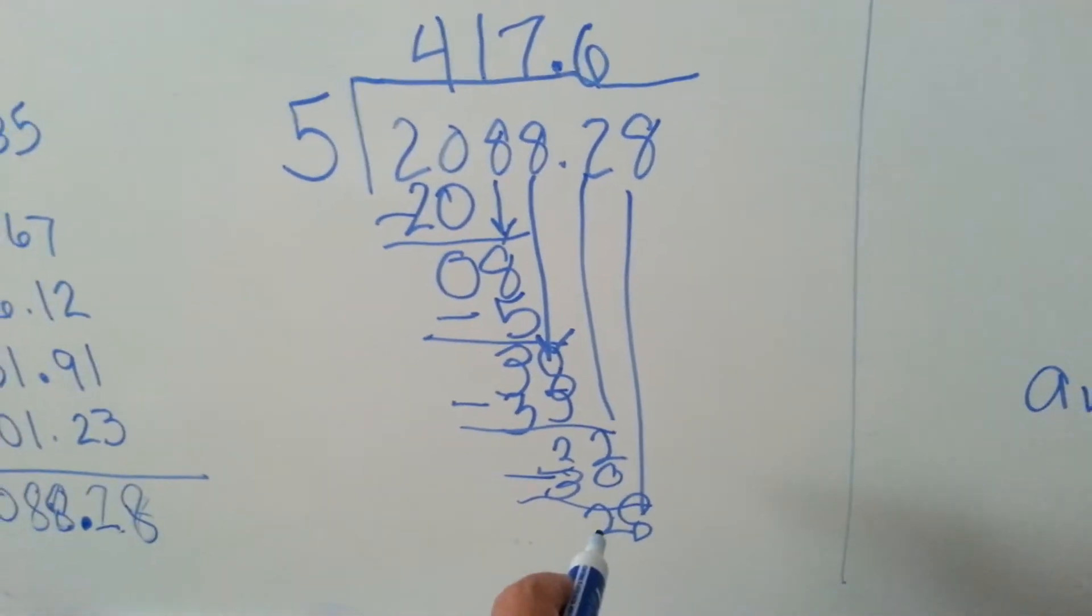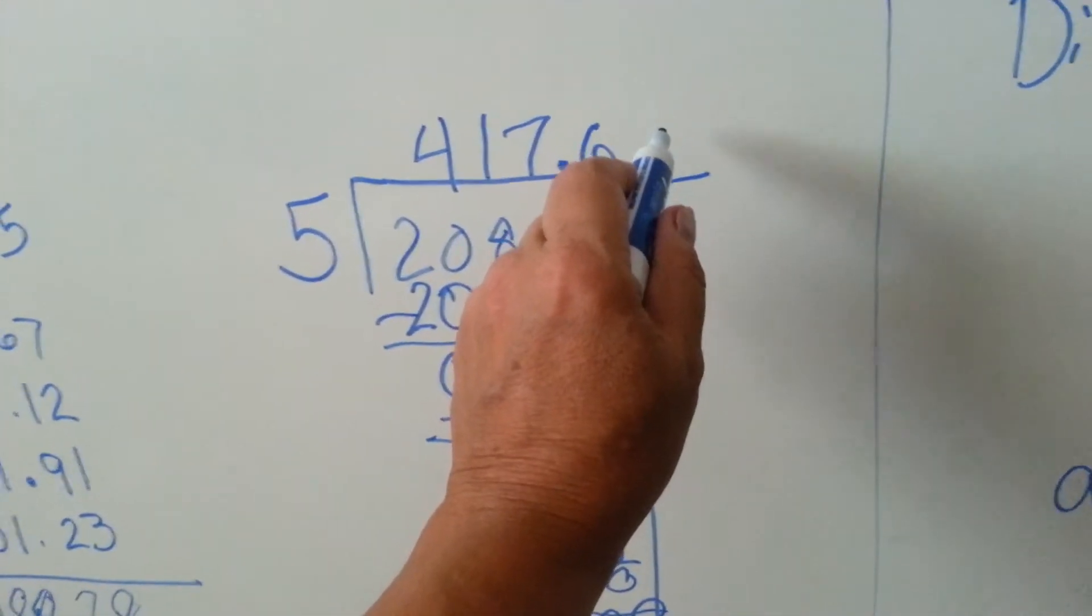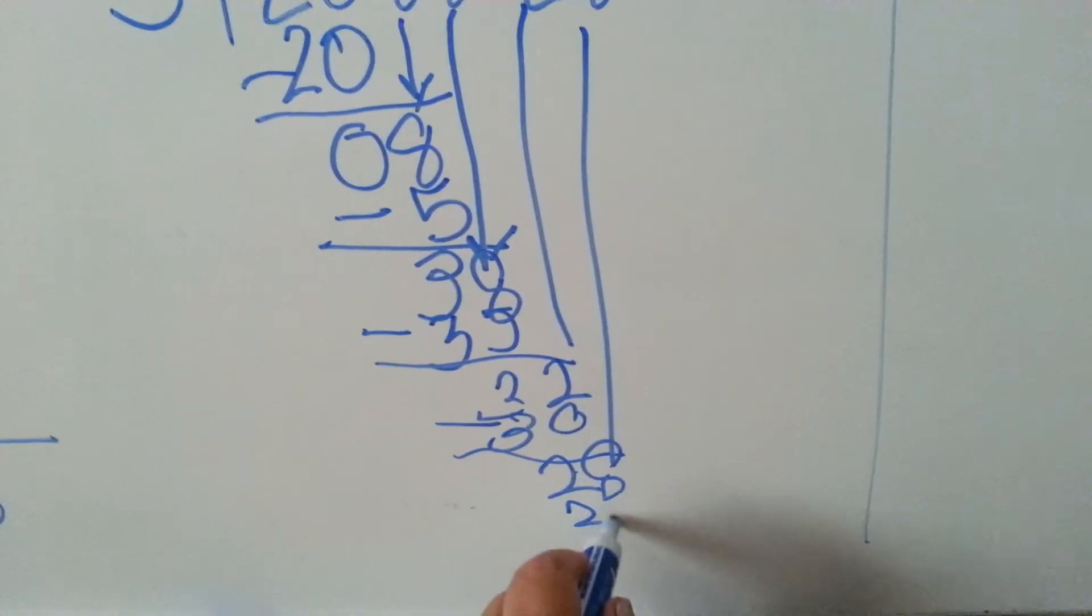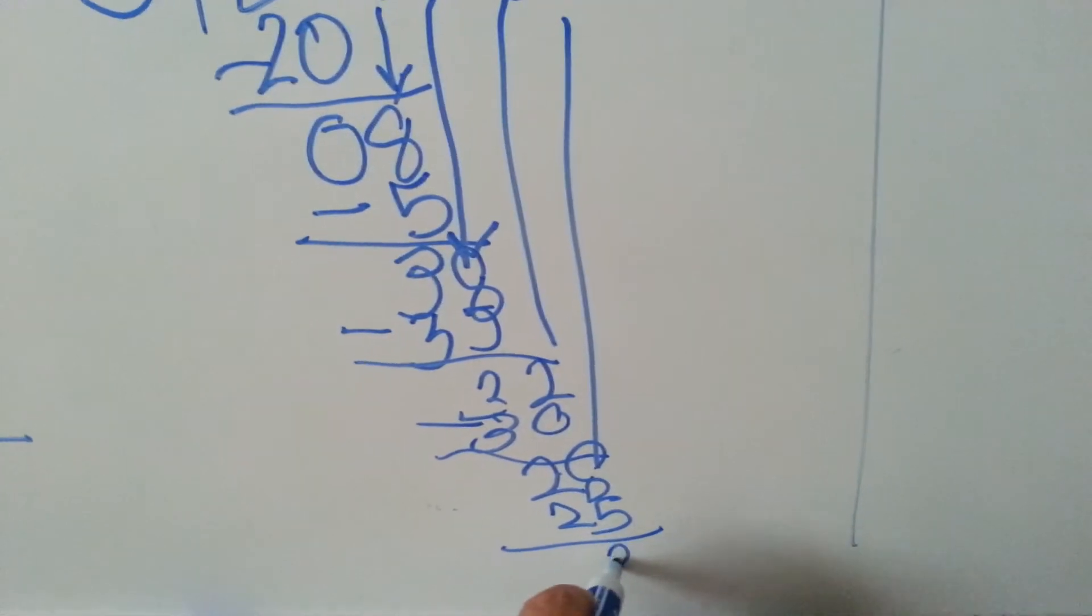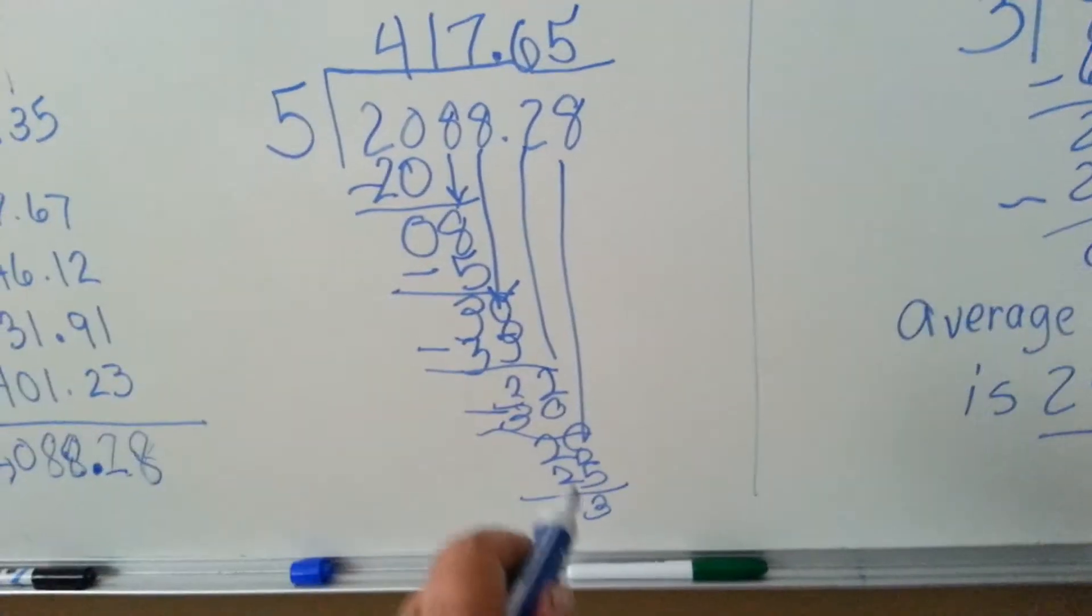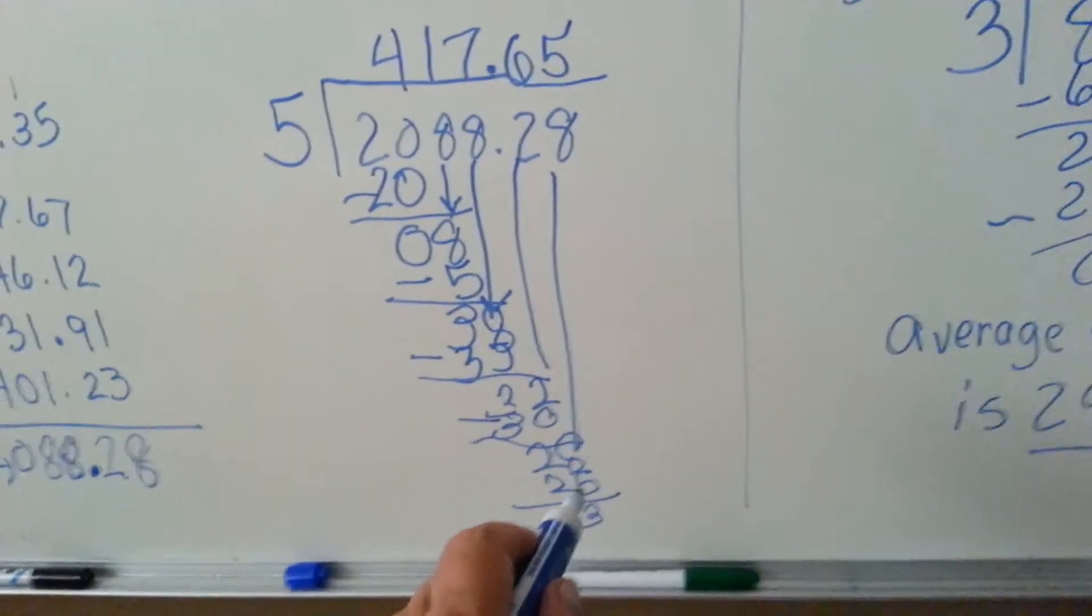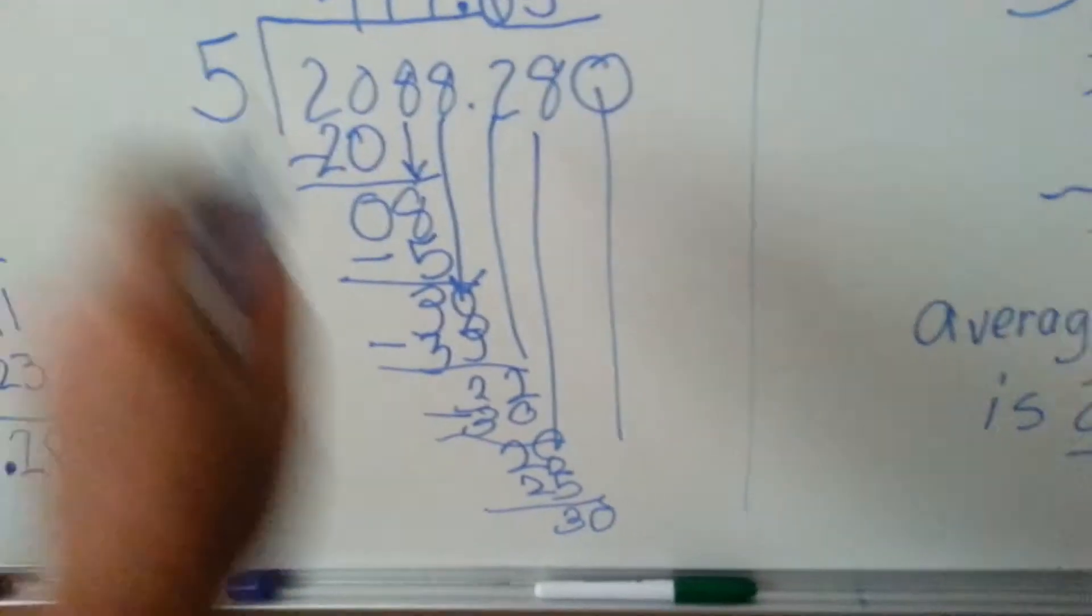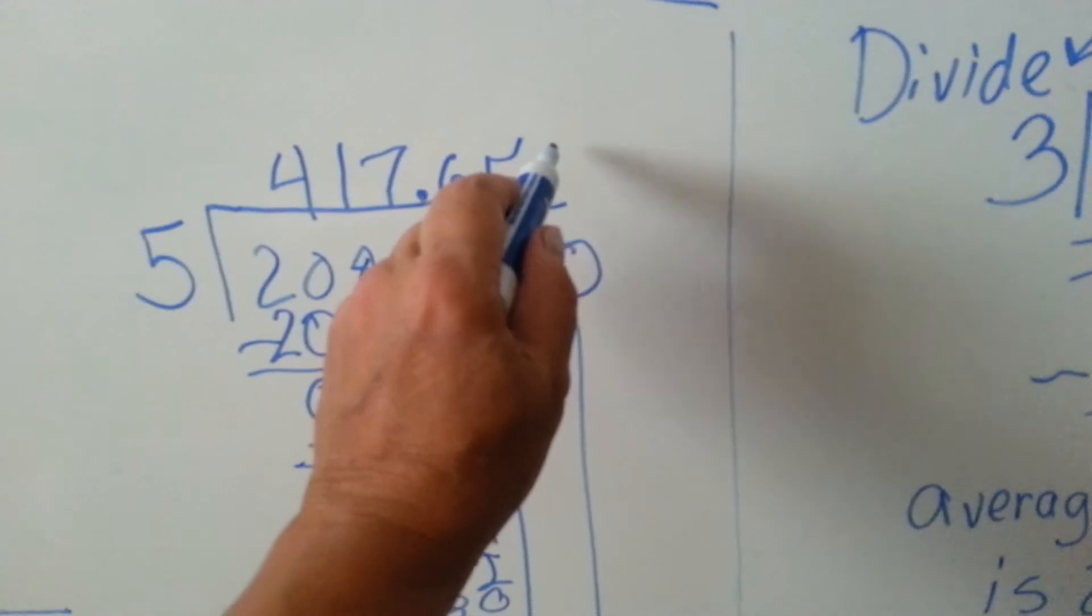Can 5 go into 28? Well, 5 times 5 is 25. So we're going to put our 5 up here, we're going to put our 25 down here. We got 3 left over. Can 5 go into 3? No. But if we add another 0 here and bring it down, 5 goes into 30 six times.